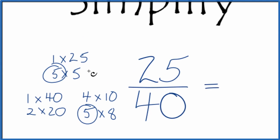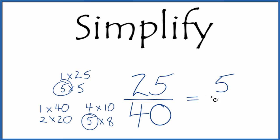So 25 divided by 5, that equals 5. And then 40 divided by 5, that equals 8.